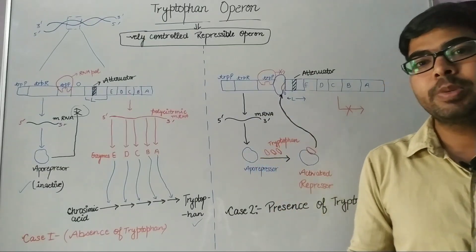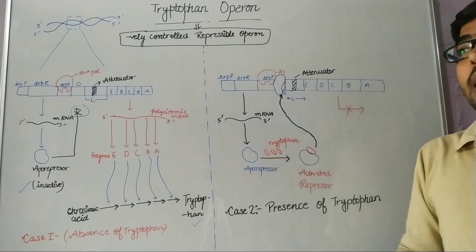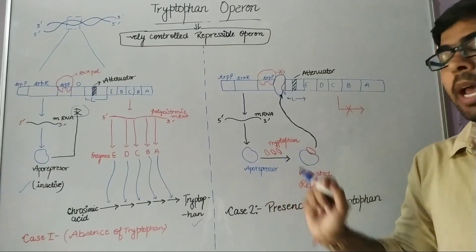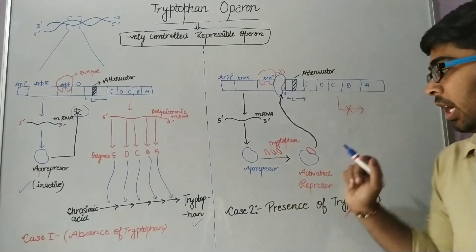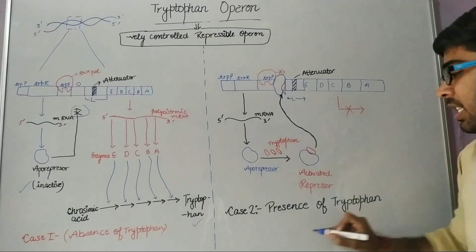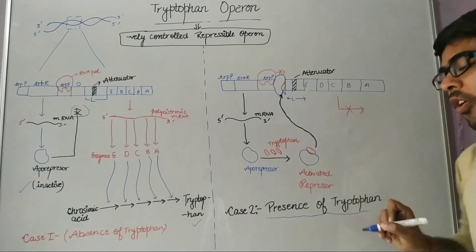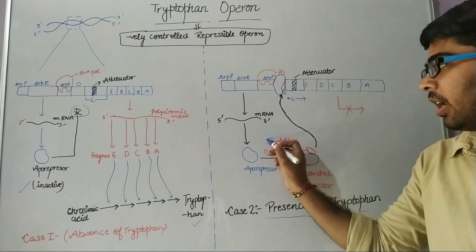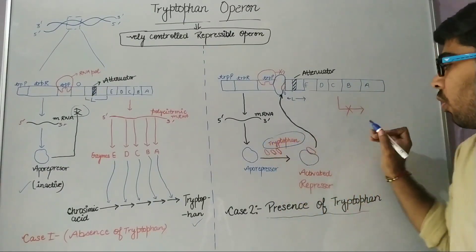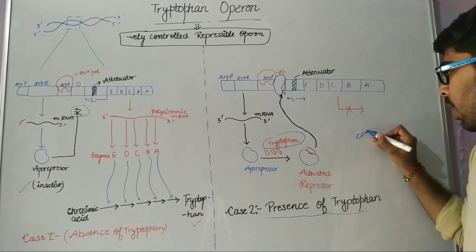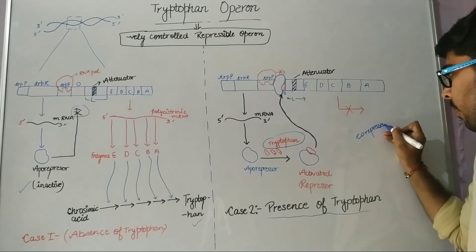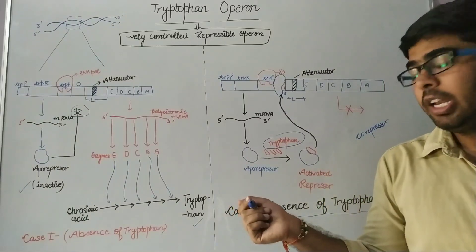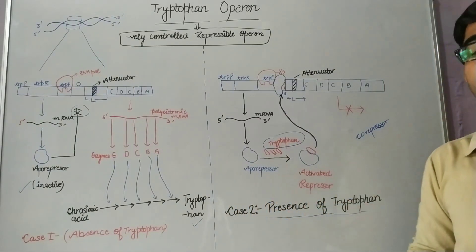The tryptophan regulatory gene encodes mRNA by the process of transcription. This mRNA undergoes the process of translation and produces aporepressor protein. Now, as there is tryptophan already present in the cytoplasm of E. coli, this tryptophan acts as a corepressor.